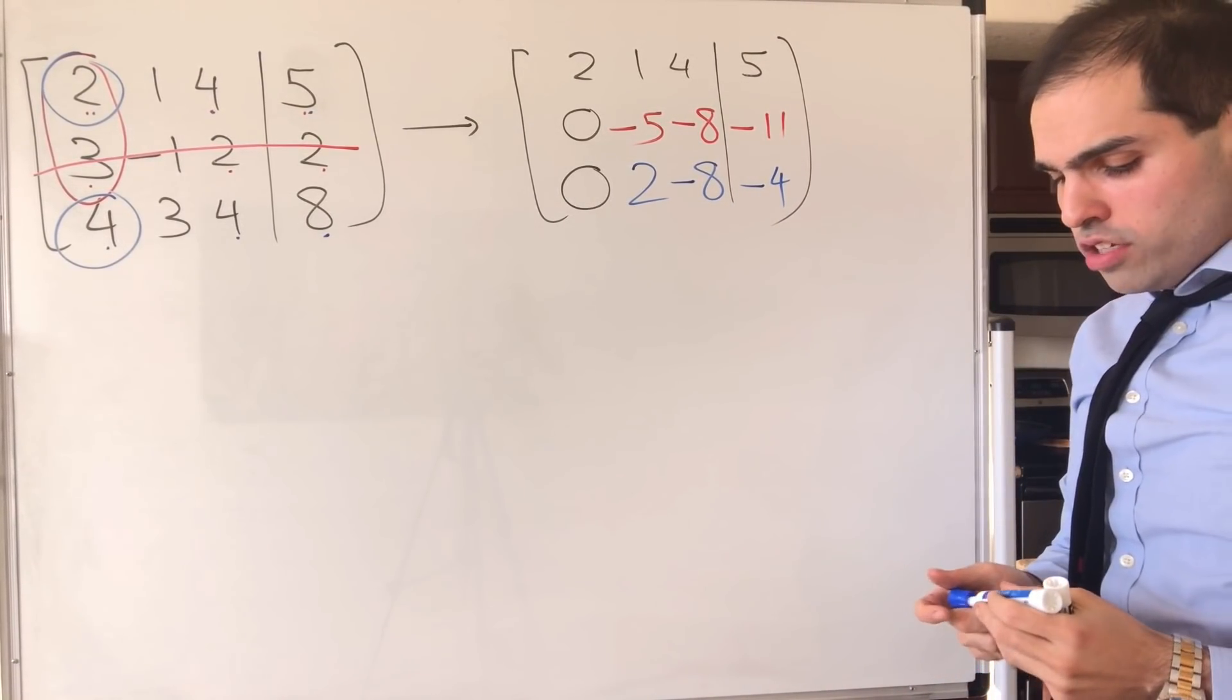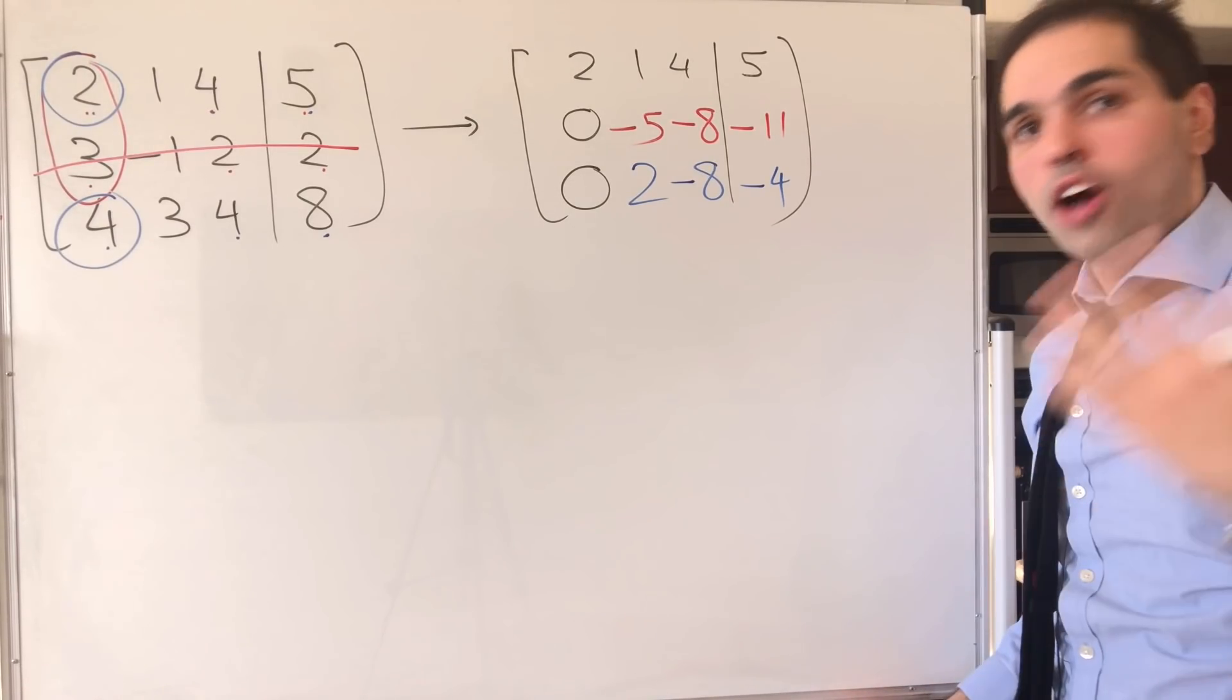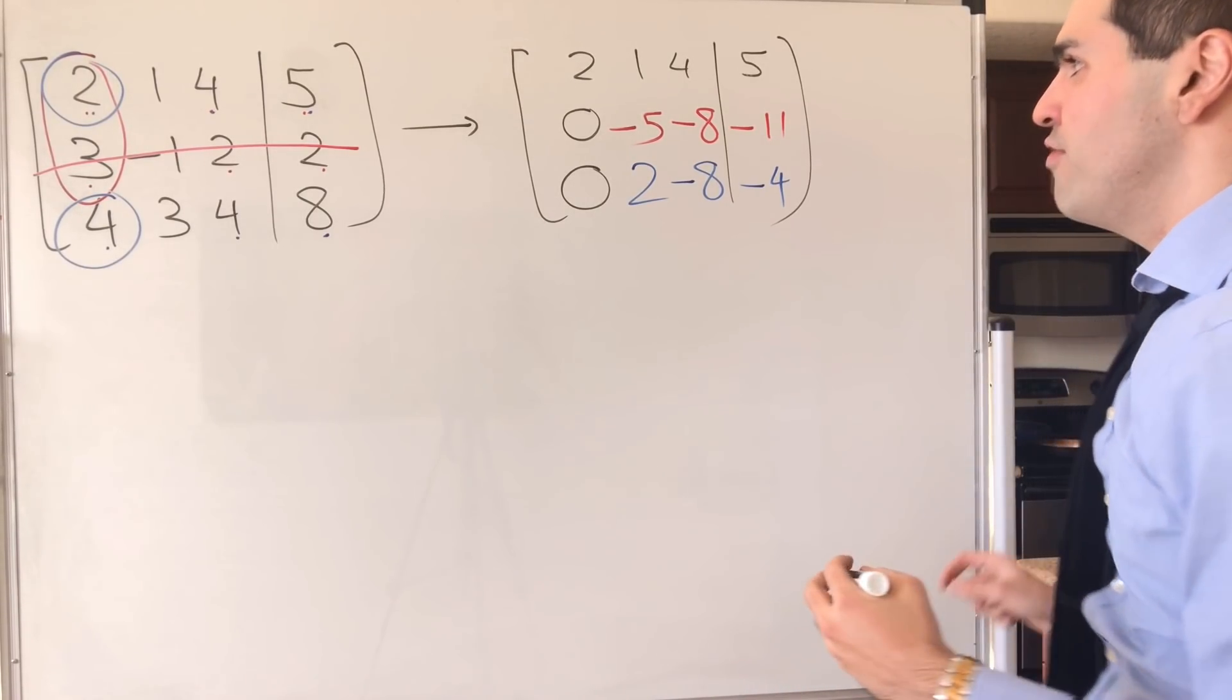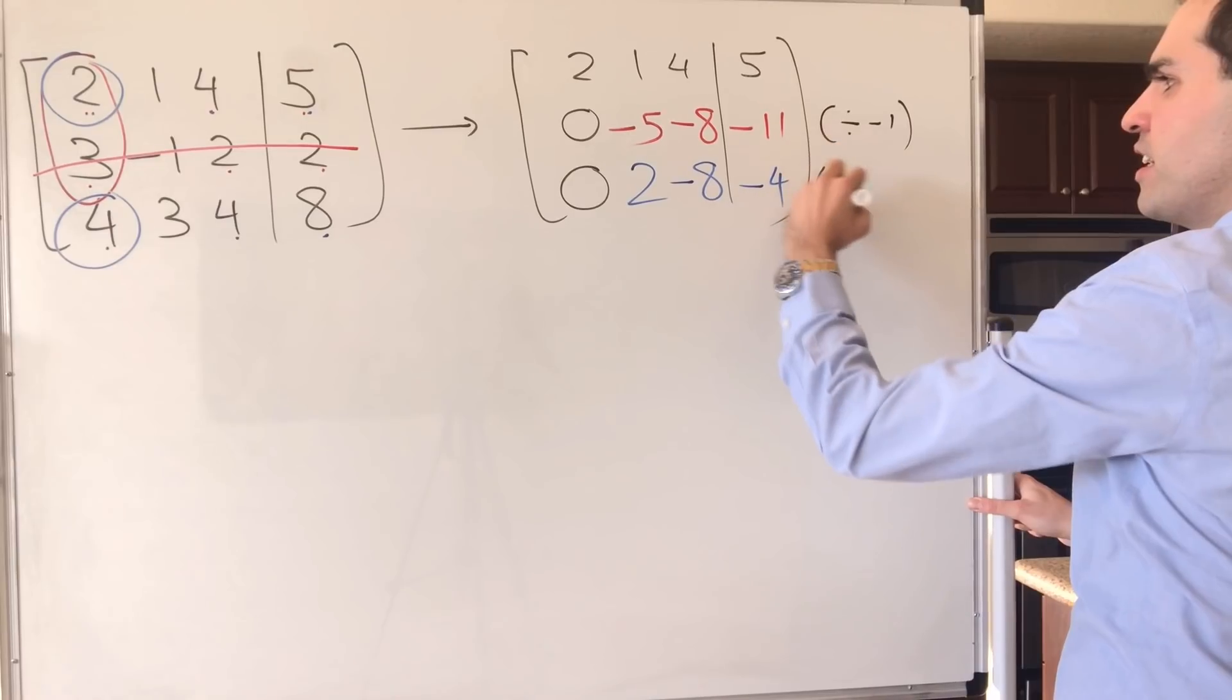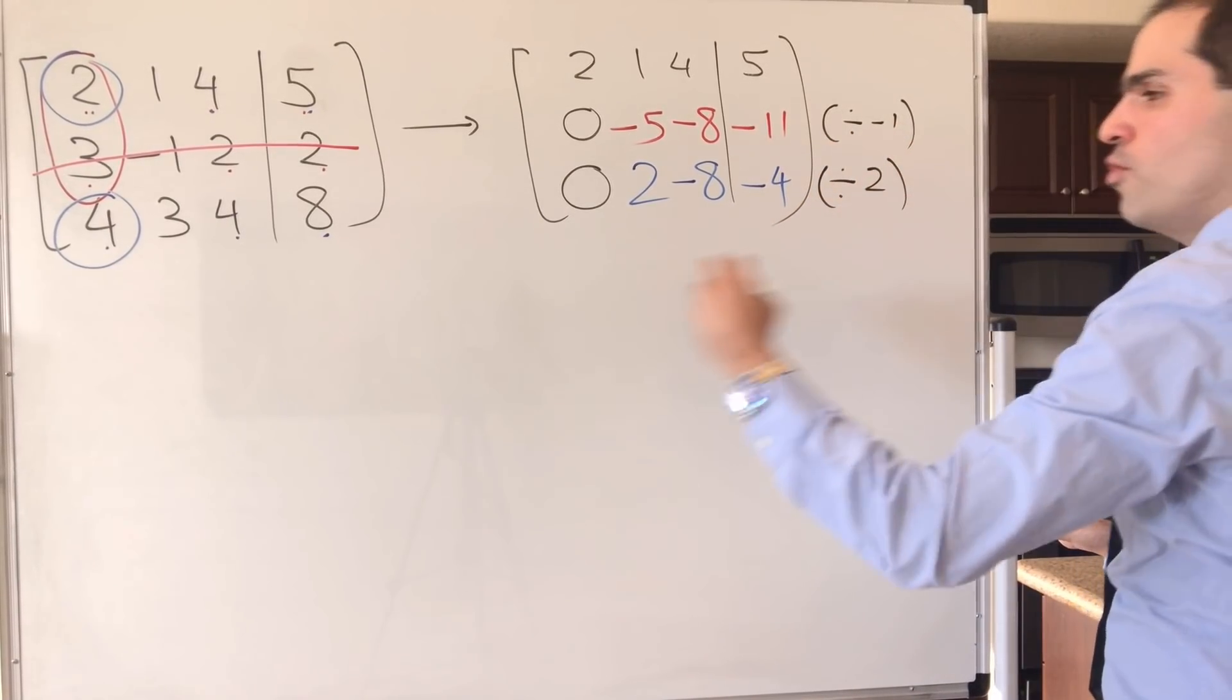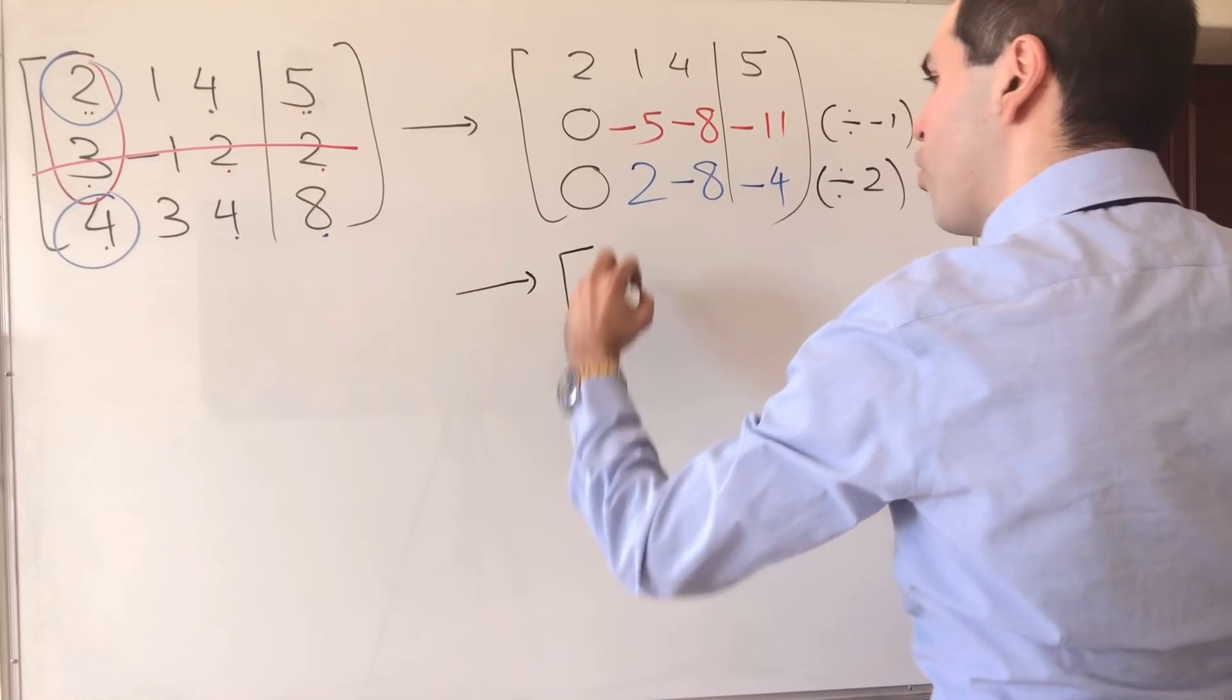And then, just like Gaussian elimination, of course, feel free to simplify things. Like here, you can divide by minus 1. And here, you can divide by 2, which gives you 2, 1, 4, 5.